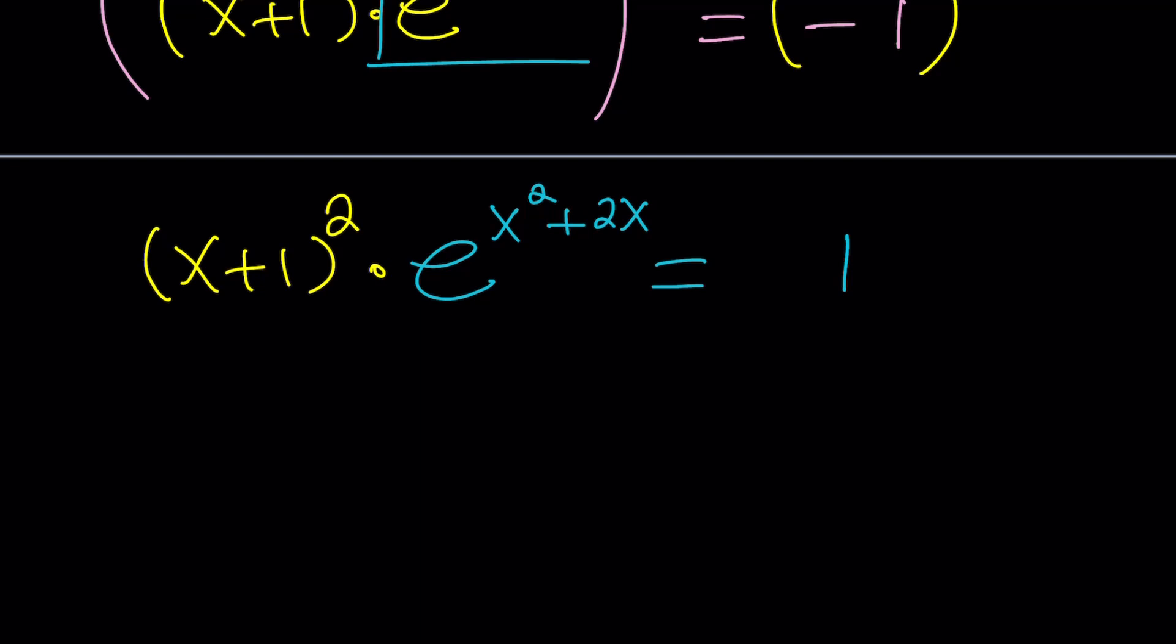We're one step away from getting x plus 1 squared. And that is adding 1 here. But how can you just magically add 1? You can't just add it, right? It just means multiplying by e to the power 1 or just multiplying by e.